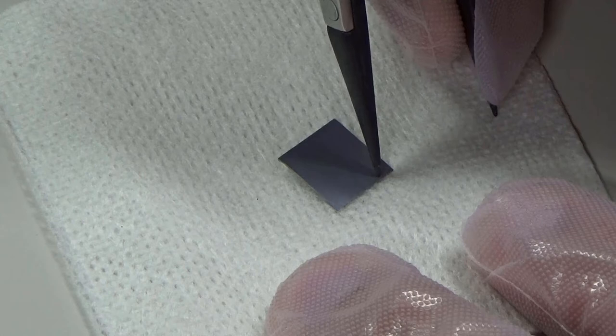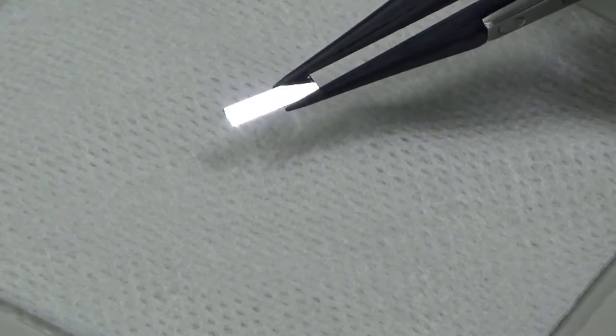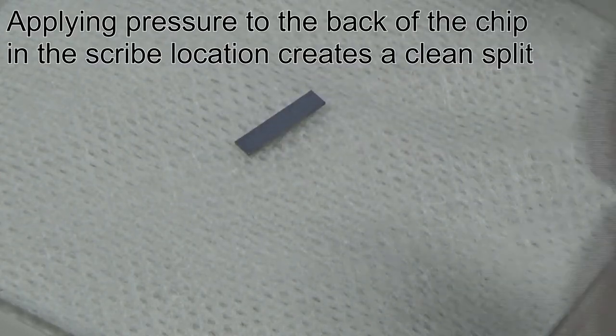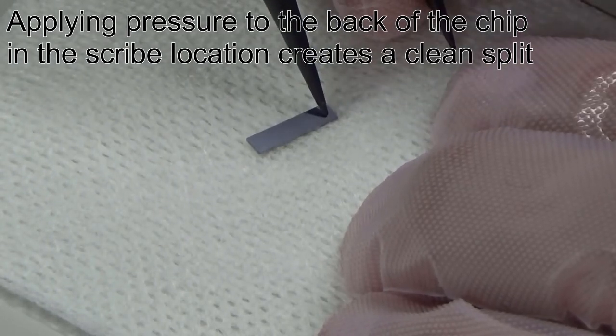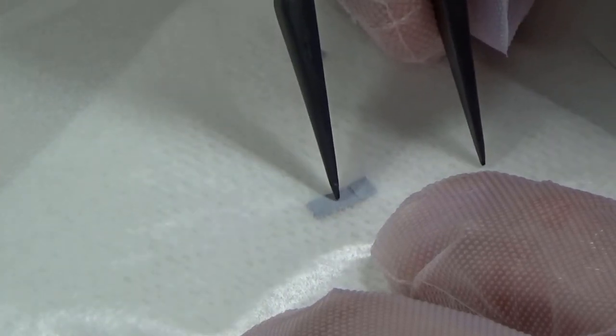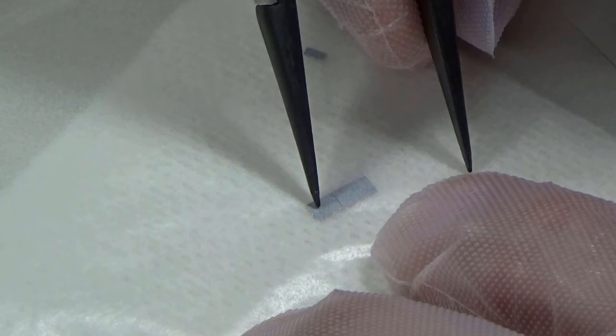This time, it's necessary to align the tool and precisely pass the tip between the devices. As before, application of pressure creates a split which follows the line of the scribe. Each small square is one device.